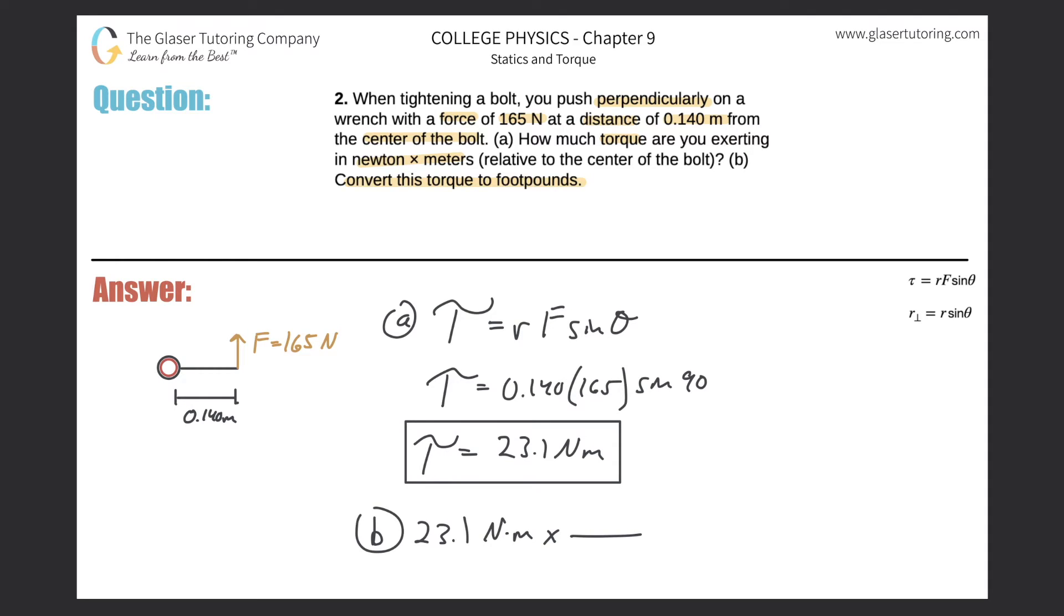Okay, so we need a conversion factor. Basically, what we have to know is that for every one newton, it is equivalent to 0.225 pounds. Okay, so the newtons will go away. And then I got to get rid of meter and convert that into feet.